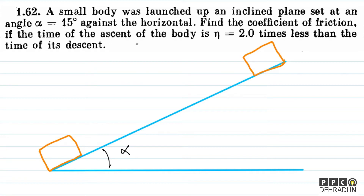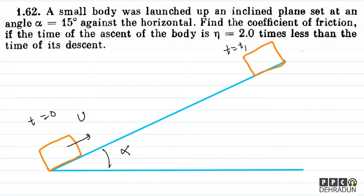The data tells us that the time of ascent of the body is eta equal to 2 times less than the time of its descent.